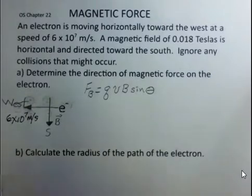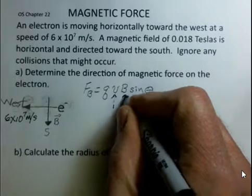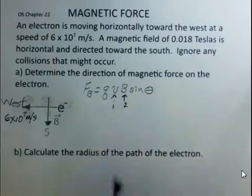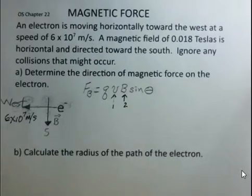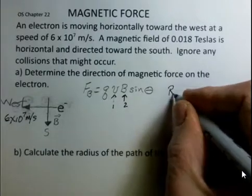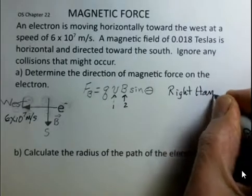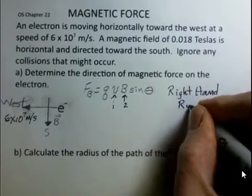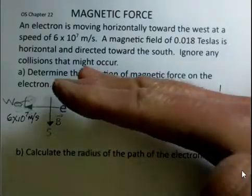The key to understanding the direction is to look at velocity and magnetic field. First, the velocity. And I use the right-hand rule to do this. So I'm going to use my right hand. If you use your left hand, you'll have to reverse at the end.